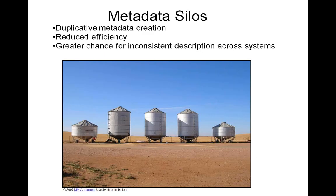Suppose we had an institutional repository with metadata embodying all those quality attributes. The metadata may be of the utmost quality, but we may still find it stored in a closed system, siloed away from other systems, without any automated or built-in mechanisms for sharing this data. This could mean that parallel or duplicative metadata creation practices could be taking place in more than one system on campus — not only an inefficient use of time and energy, but also increasing the chances for inconsistent description across systems.